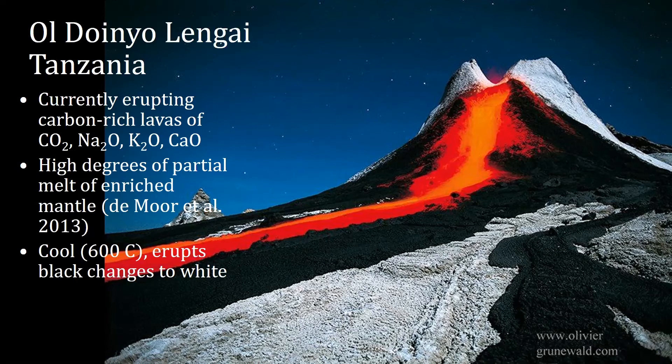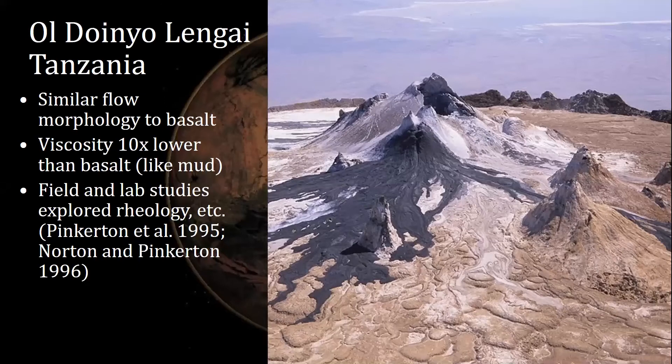What's fascinating about these is that they're actually pretty cool — they erupt at just about 600°C maximum. As they erupt, they come out black, and then they gradually change to white, as you can see in this image here. This is a nighttime image. Here's a daytime image — you can't even see the red because it's really too cool. You can see the young black flows coming out right here. It has a similar flow morphology to basalt, with hornitos that look really similar to those in a basalt lava flow field. The viscosity is quite a bit lower — 10 times lower than basalt — it's a little bit like mud.